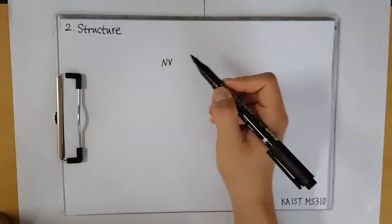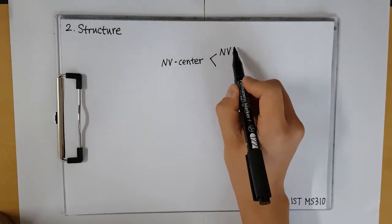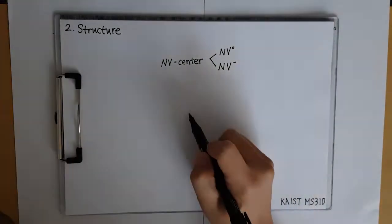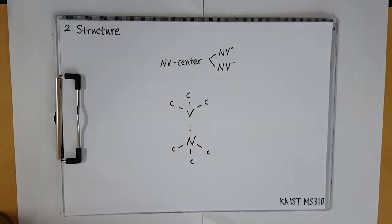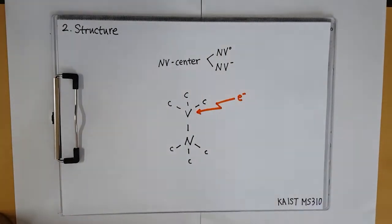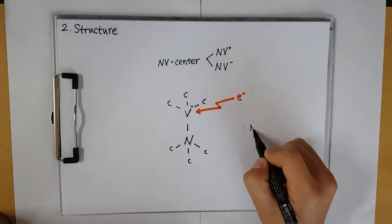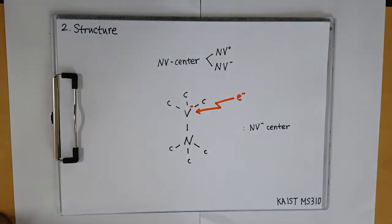This NV Center does not have only one kind. We can separate it by two: NV Zero and NV Minus. What we have talked about so far is NV Zero. This NV Zero Center can be converted into NV Minus Center by one electron entrance to vacancy.